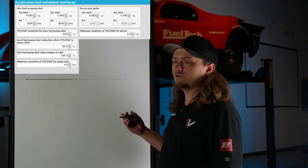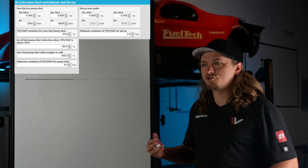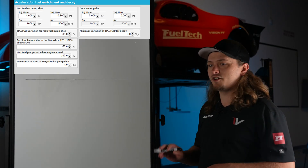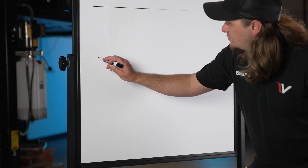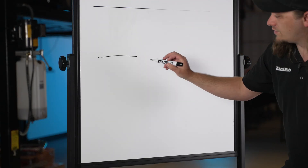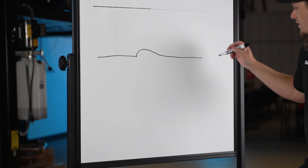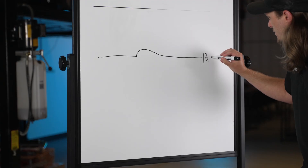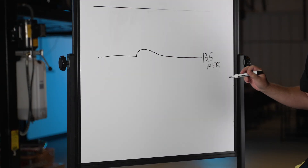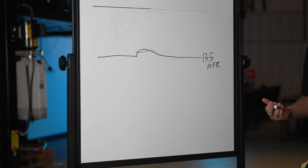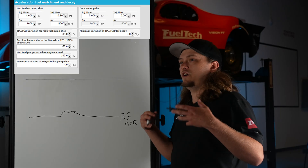The reason we use acceleration fuel enrichment — pump shot — is to help the engine rev clean, usually off idle or part throttle situations where you're on and off throttle a lot. A reason we need to add this: let's say my O2 is a nice flat number, you rev the car, you'll get a lean spot on the O2 and then it comes back down. Let's say this is 13.5 AFR and it spikes up here somewhere in the 14s. The way to fix this is we're going to give it acceleration fuel enrichment when we open the throttle.